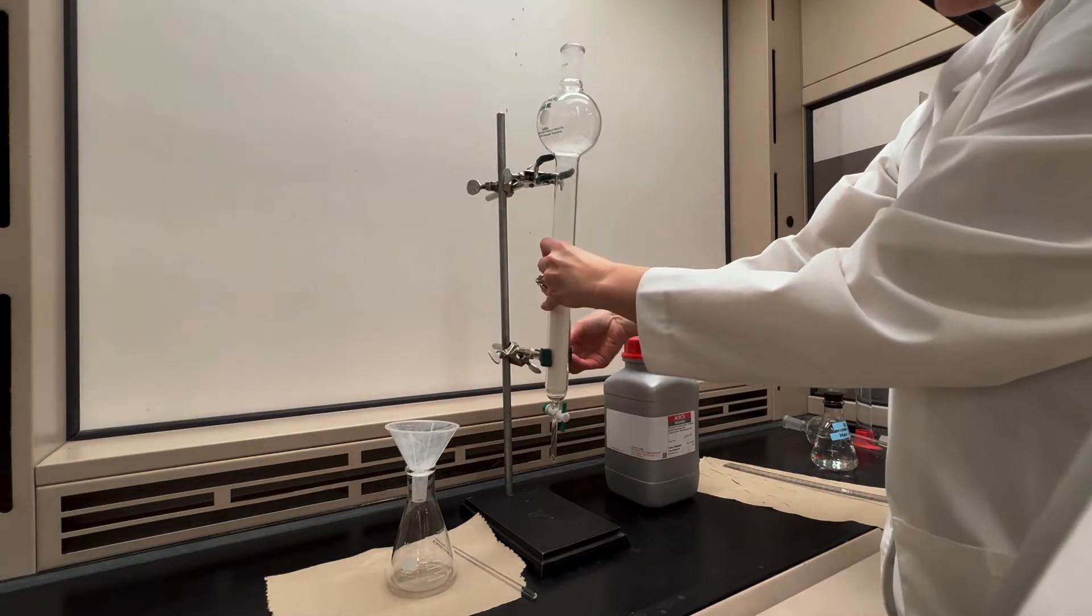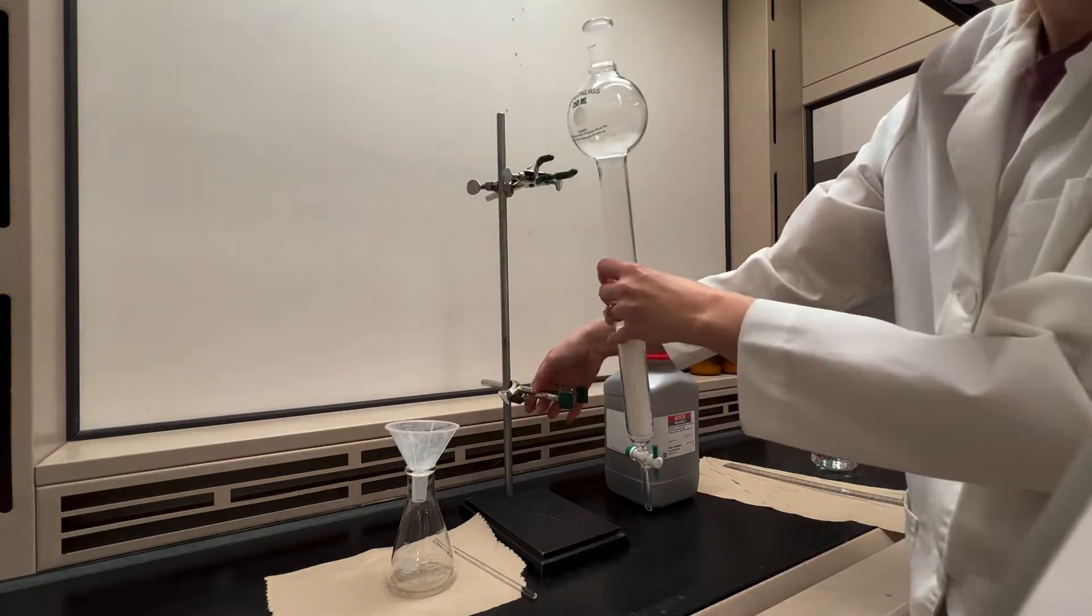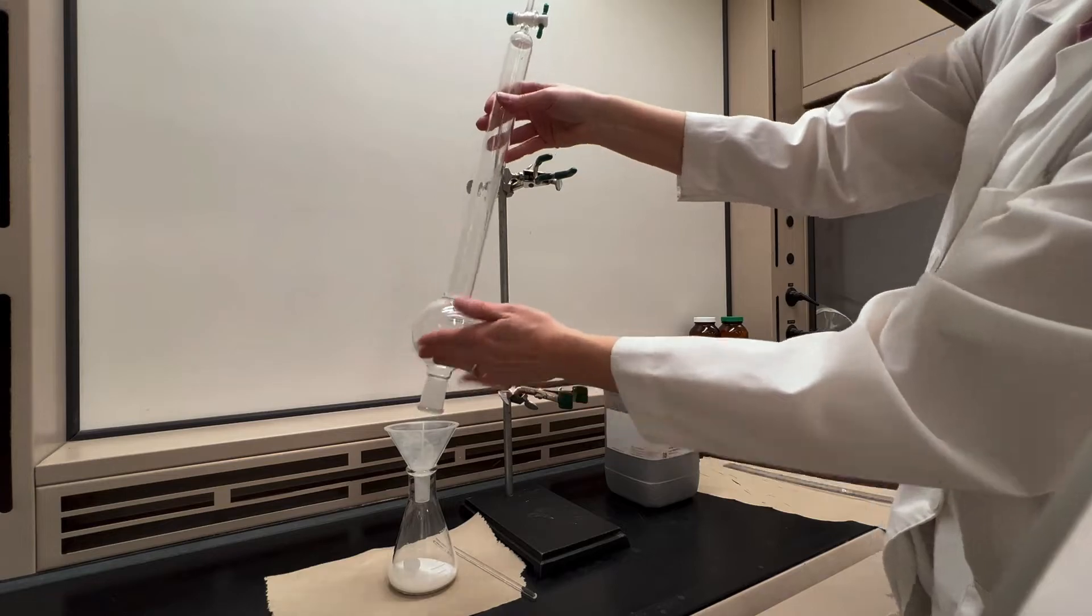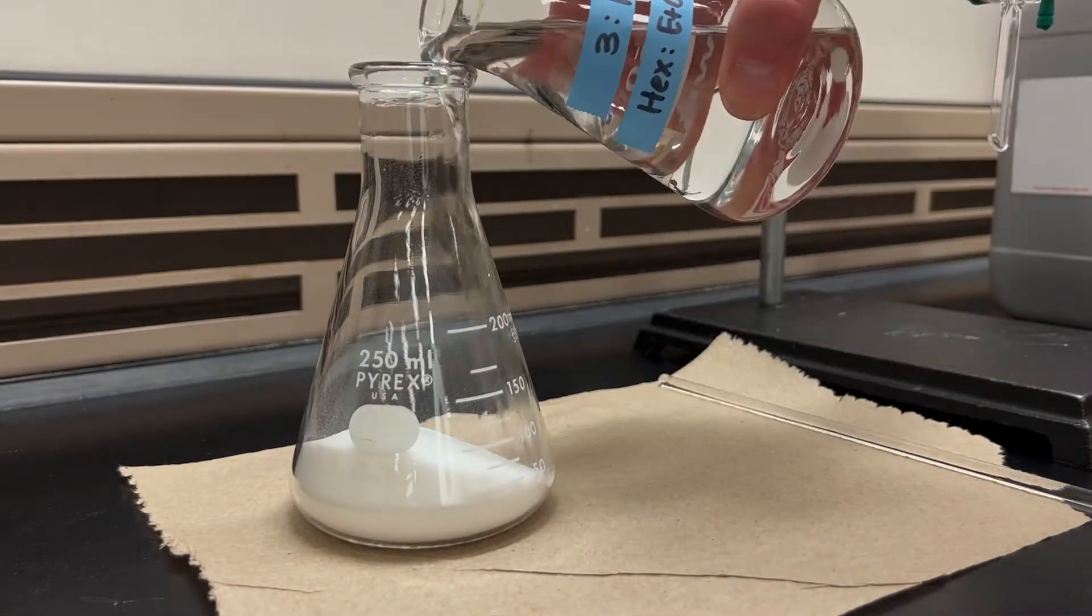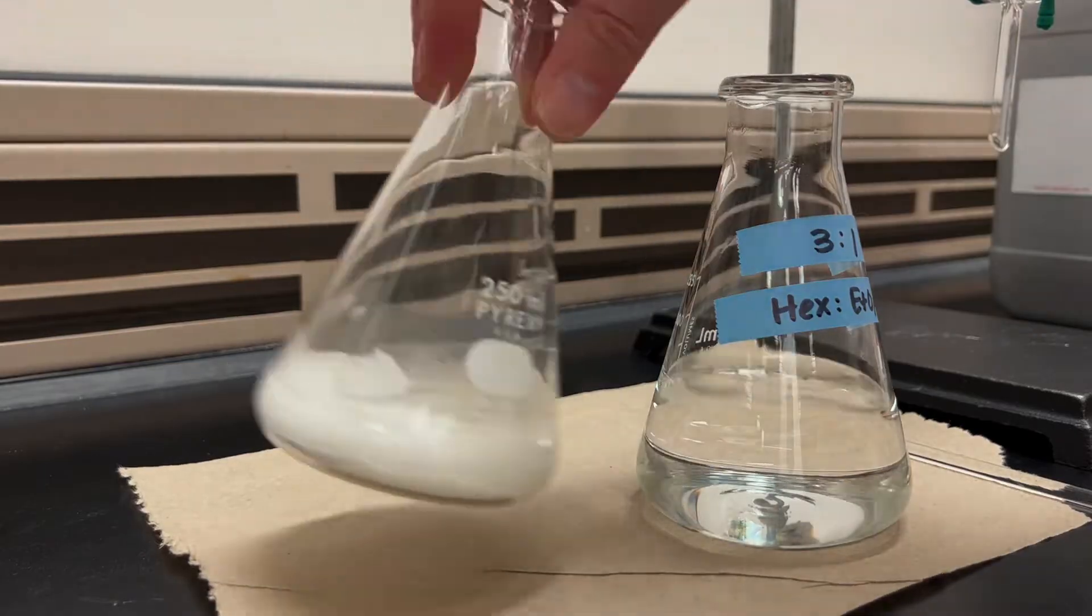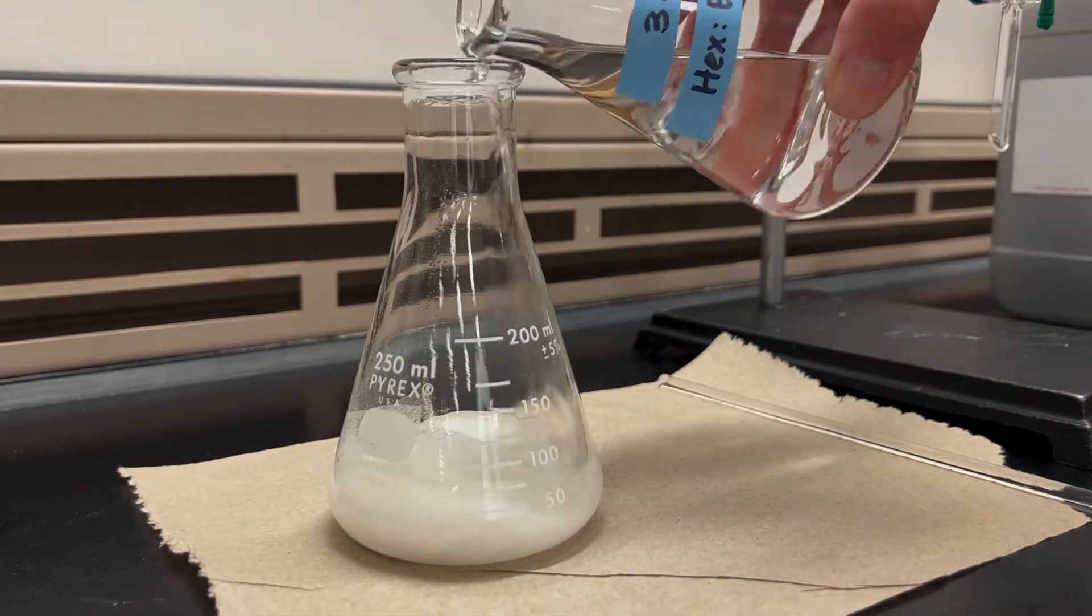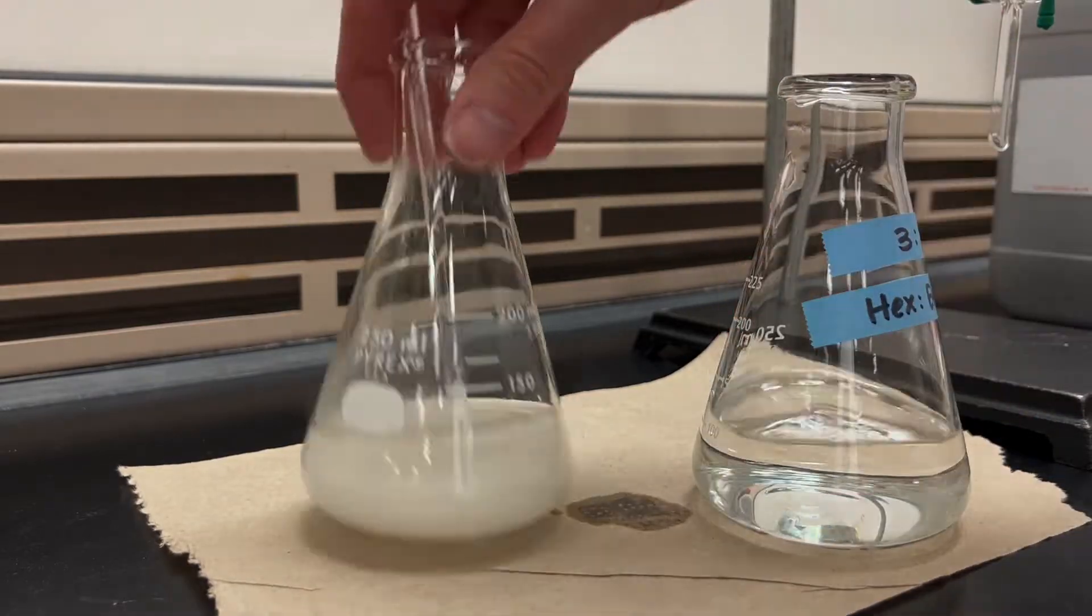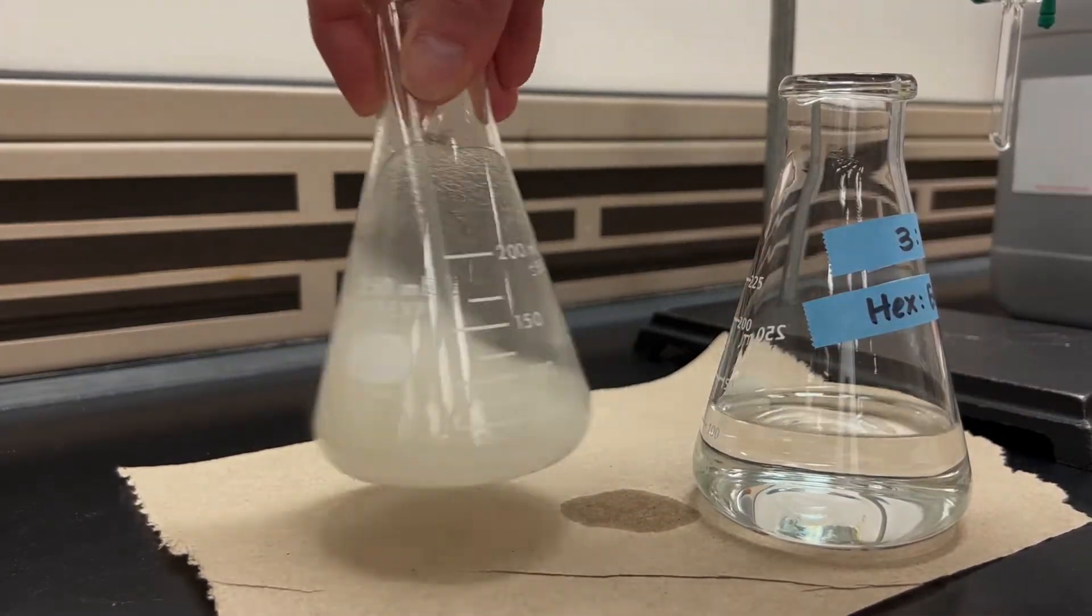I'll next transfer that funnel to a large Erlenmeyer flask and pour out the silica. Then I'll make a slurry with the silica gel by adding some of the solvent that I plan to use on the column. Just pour some in, give it a swirl, you might even use a glass stirring rod to help stir the mixture, but add enough solvent so that it's a pourable mixture.